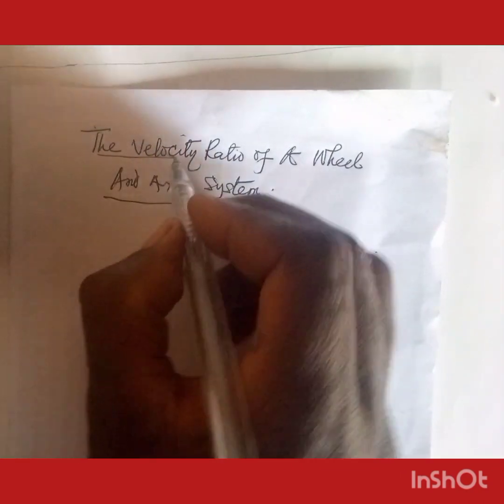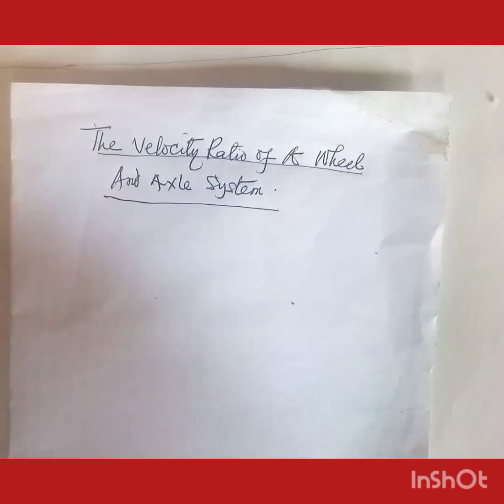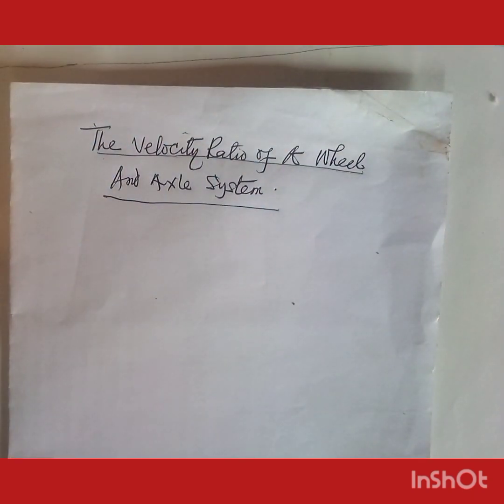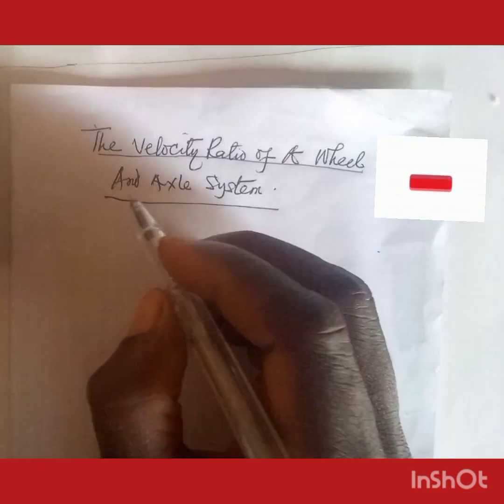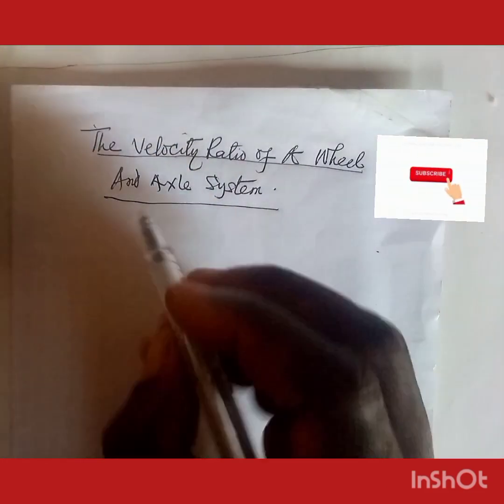Now the wheel and axle system is usually employed to lift a body to a particular height. For example, when you draw water from a well. Let's put up a little drawing to help us understand how it works.